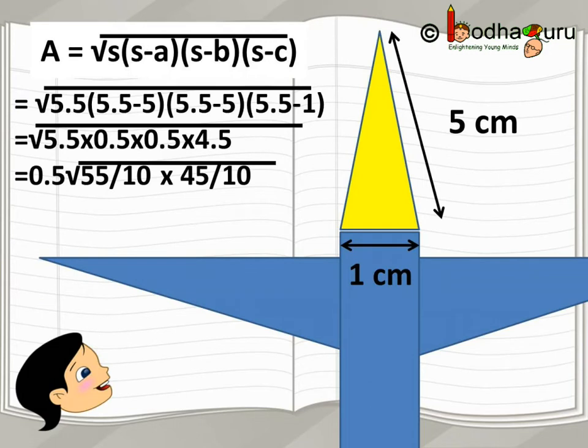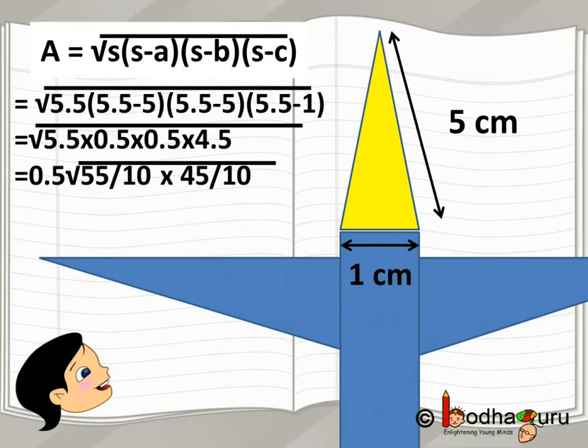5.5 minus 5 is 0.5, again multiplied by 0.5 multiplied by 0.5 multiplied by 4.5 as 5.5 minus 1 is 4.5. If you see, there are two 0.5s under the square root, so one 0.5 comes out of the square root.